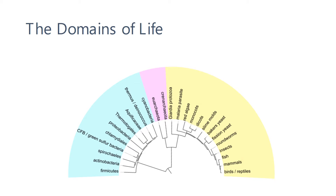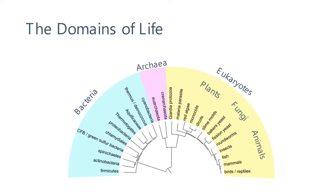When sorting out the diversity of life, scientists look for similarities between different organisms. One method of taxonomy groups organisms into three domains of life: the archaea, bacteria, and eukarya. The eukarya consists of plants, fungi, and animals, and other cells that you're probably more aware of.